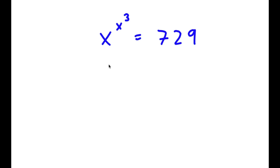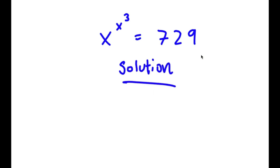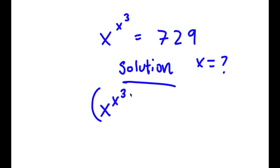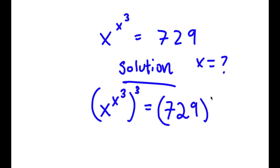In this problem, I have x to the power of x to the power of 3 is equal to 729. I'm going to start by taking the power of 3 on both sides. So now I have x to the power of x to the power of 3, to the power of 3, is equal to 729 to the power of 3.